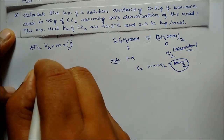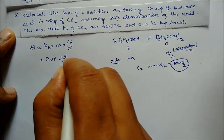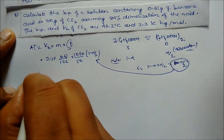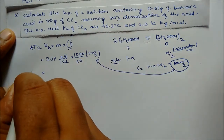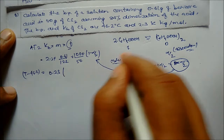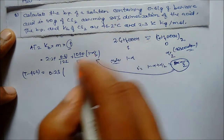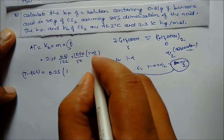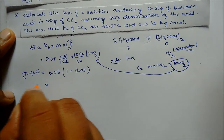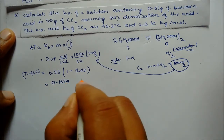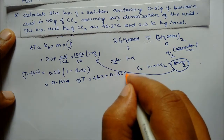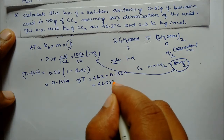Putting values: delta T = 2.3 × (0.61/122) × (1000/50) × (1 - alpha/2). With alpha = 0.84: i = 1 - 0.84/2 = 1 - 0.42 = 0.58. Solving, delta T = 0.1334. The boiling point T = 46.2 + 0.1334 = 46.334°C. This is our answer.